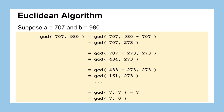If you went one step further, one of your two terms would be zero, in which case the other number must be the greatest common divisor. This is much faster than factoring 707 and 980 down to their component primes, because it's just a series of simple subtractions — very easy for both a human and a computer, just a process you follow.